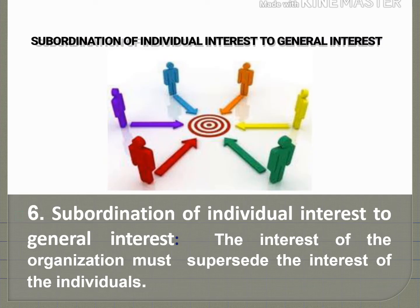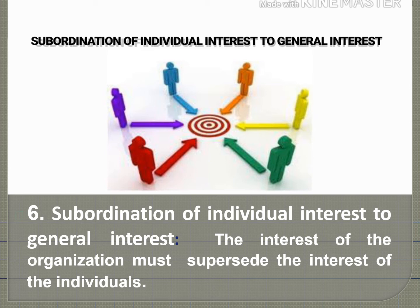The sixth principle is Subordination of Individual Interest to General Interest. It means the interest of the organization must supersede the interest of the individual. Each individual in the organization should subordinate or surrender their personal interest to the common interest. The general or common interest should be given importance over the personal interest of individuals.